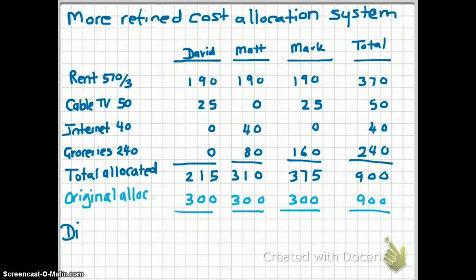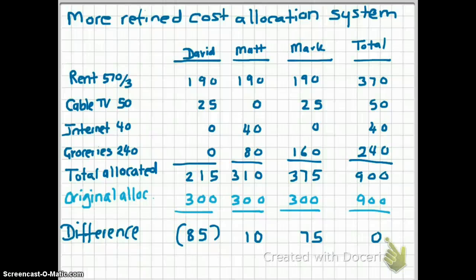The original allocation system over-allocated costs to David and under-allocated costs to Mark and Matt. David was paying $85 more than what he was using up, whereas Matt was paying $10 less than what he was actually using up, and Mark was paying $75 less than the resources he was using up. So our more refined cost allocation system reduced cost distortion and made our cost allocation more accurate.